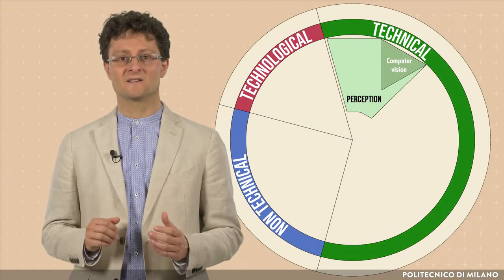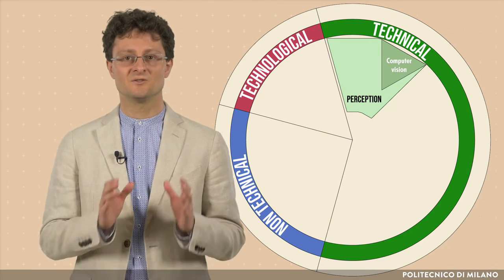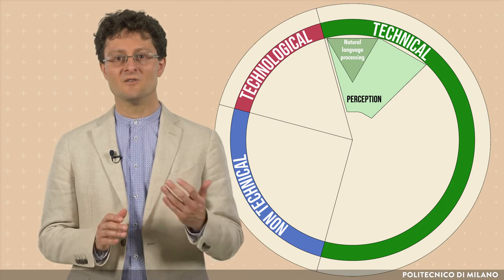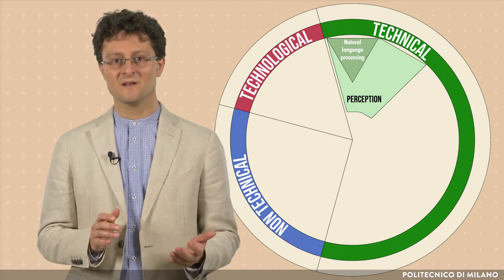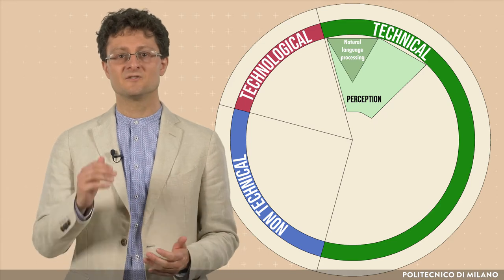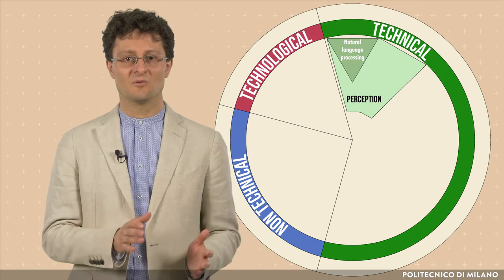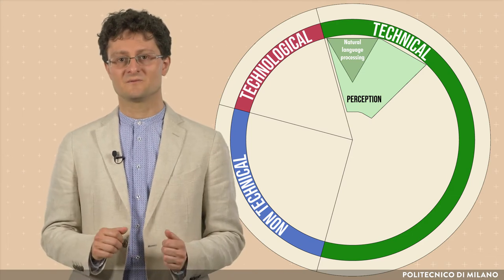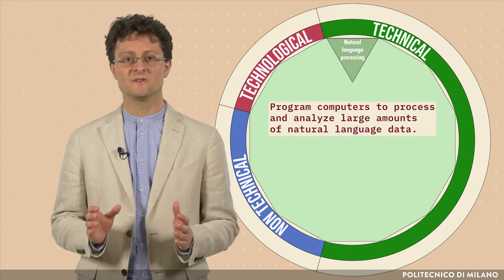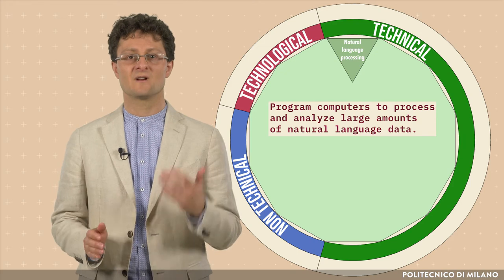Another perception task of paramount importance is artificial intelligence related to language. Natural language processing, known as NLP, is a subfield of linguistics, computer science, and artificial intelligence directed to the interaction between computers and human language. In particular, the goal is to program computers to process and analyze large amounts of NLP data.